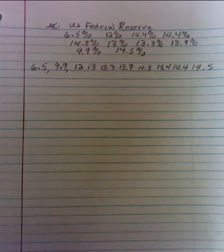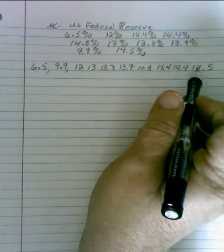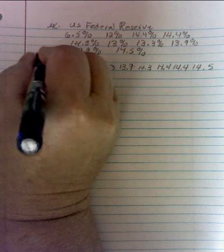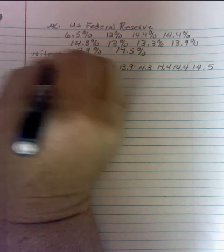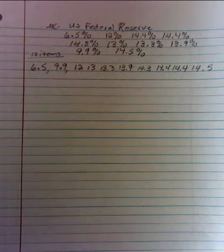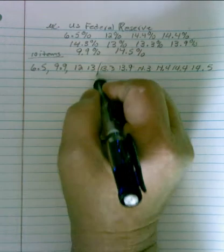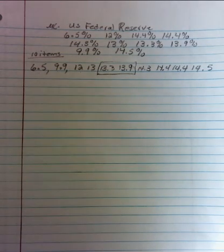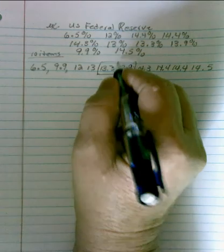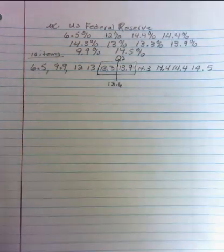Now, how many items do we have? 1, 2, 3, 4, 5, 6, 7, 8, 9, 10. So 10 items, which means we have no middle value. So we need to take the 2 in the middle and find the average. So 1, 2, 3, 4, 5, and 6 and find that average. And so that average is 13.6 for quartile 2 or the median.